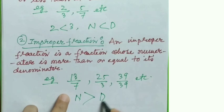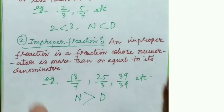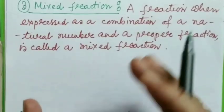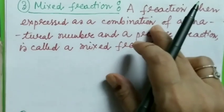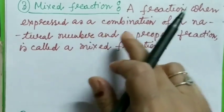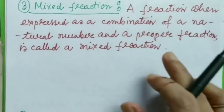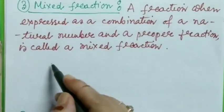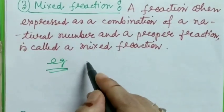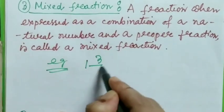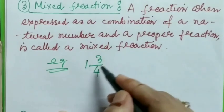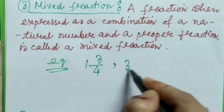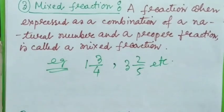Next is mixed fraction. A fraction when expressed as a combination of a natural number and a proper fraction is called a mixed fraction. For example: 1 and 3/4, 3 and 2/5, etc. — these are mixed fractions.